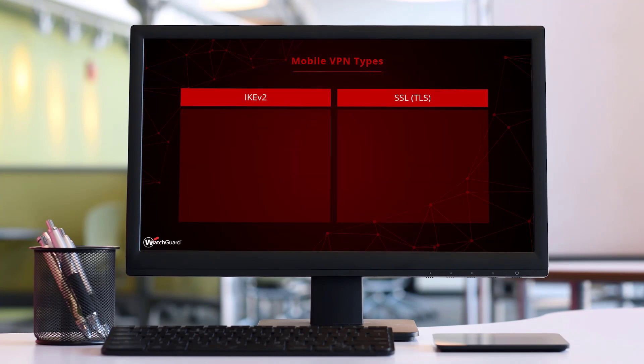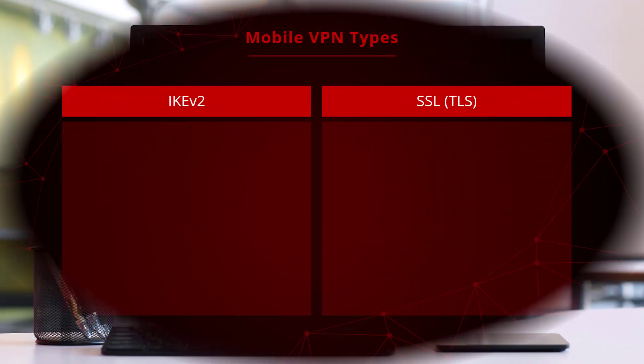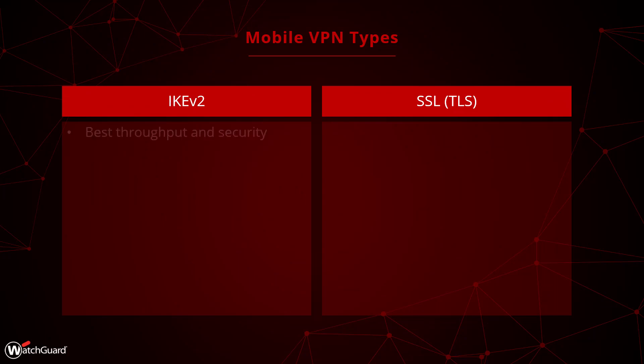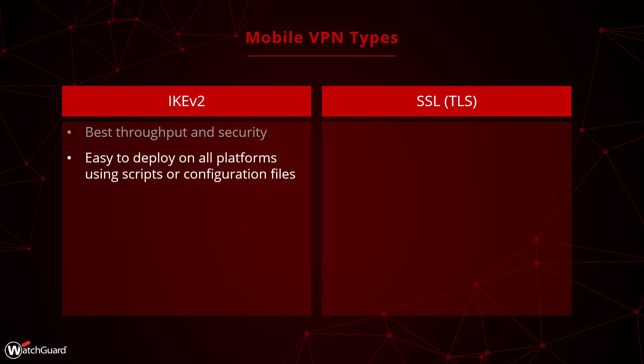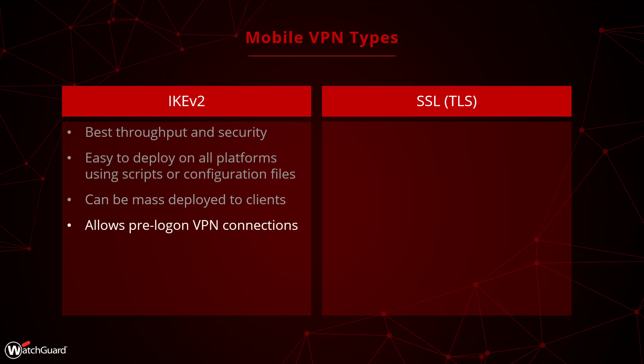Let me quickly cover some main differences between IKEv2 and SSL VPN. The IKEv2 Mobile VPN is recommended as it provides the best throughput and security, and it is fairly easy to deploy because you will be provided with the scripts and configuration files necessary to get the built-in clients working, for which you do not need software on any platform except Android, where you would use the StrongSwan client. Furthermore, the IKEv2 VPN can be easily deployed to many clients at once using deployment tools like Active Directory Group Policy. IKEv2 also allows pre-logon VPN connections, which means that the client machine builds the VPN at the logon screen, and the computer can then use domain resources.